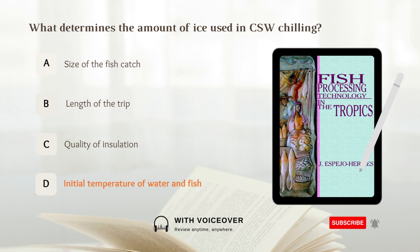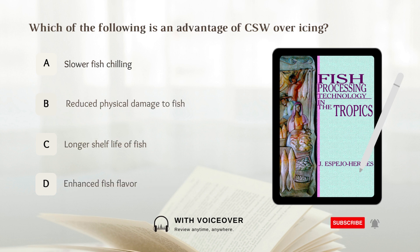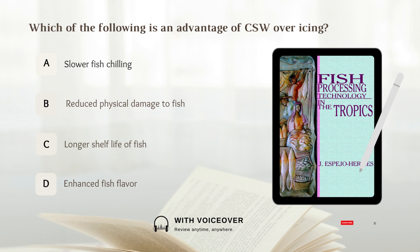Which of the following is an advantage of chilled seawater over icing? A. Slower fish chilling. B. Reduced physical damage to fish. C. Longer shelf life of fish. D. Enhanced fish flavor. Answer: B. Reduced physical damage to fish.